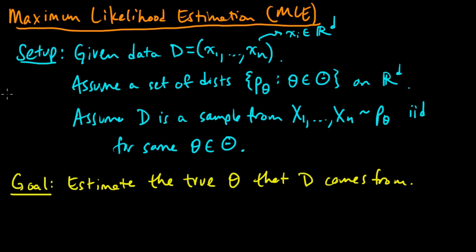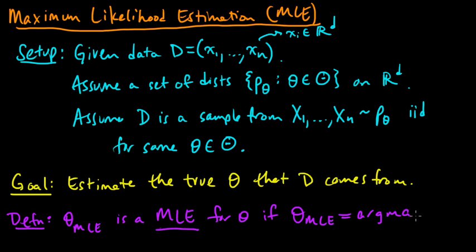Here comes the definition. Under this setup, the maximum likelihood estimate is the following: a theta, which we'll denote as theta sub MLE, is a maximum likelihood estimate for theta if it maximizes the probability of the data. It's equal to the argmax over the thetas in the whole range of possible thetas of the probability of the data given theta.